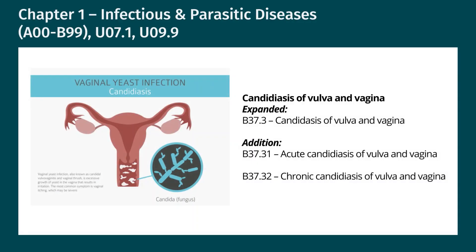For the first chapter, infectious and parasitic diseases, coding Candidiasis now has two codes. Candidiasis is an infection caused by yeast, a type of fungus called Candida, that normally lives on the skin and inside the body, such as the mouth, throat, gut and vagina, and usually does not cause any problems. Candida can cause an infection if conditions change inside the vagina that encourage its growth. This condition is usually seen and treated in an outpatient setting.